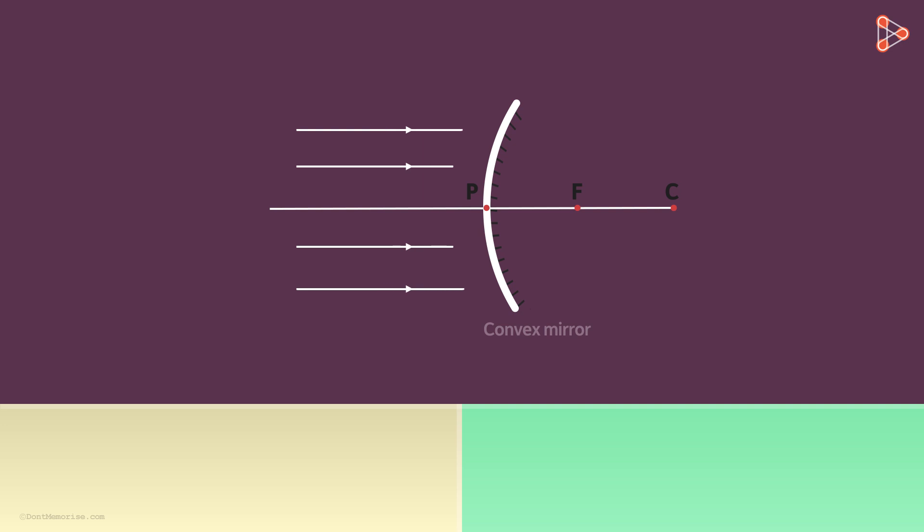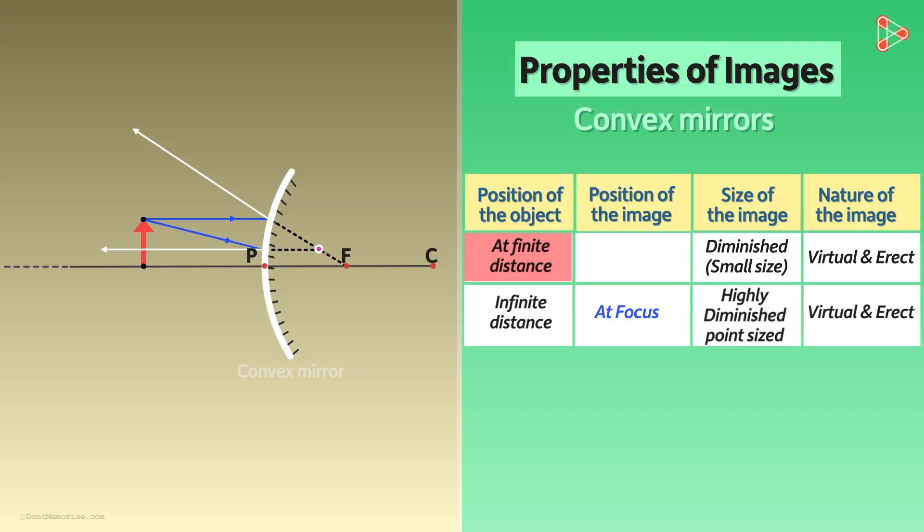Also, if the incident ray is travelling parallel to the principal axis, then after reflection, it will look as if it originated from the focal point. For instance, here all these reflected rays seem to be coming from this focal point. With this bit of knowledge, let's jump back to where we were initially. Now I think you understood the reason behind my choice of these two rays.